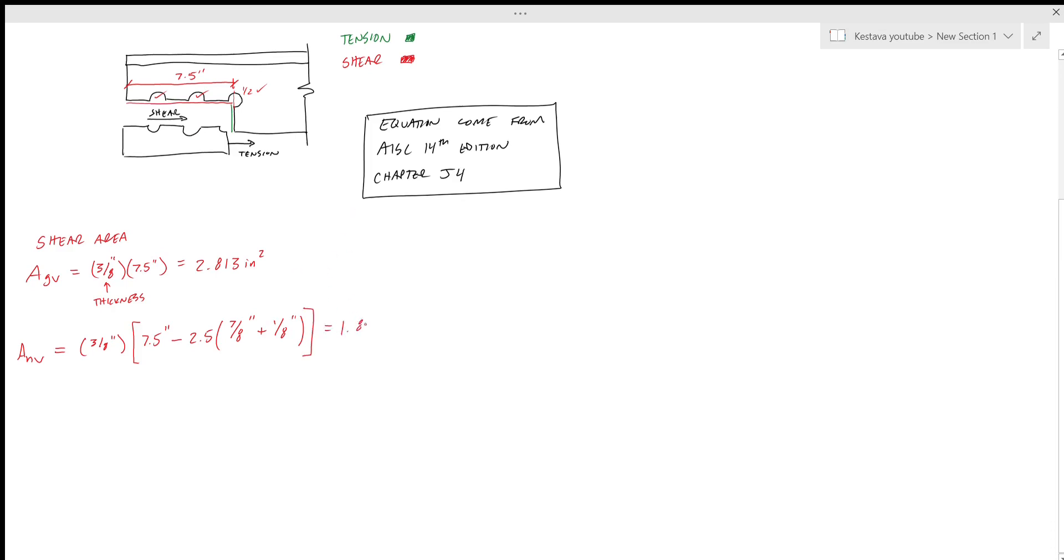Now shear's out of the way, let's switch over to tension area, denoted ANT. This is your net tensile area. ANT is going to equal the thickness of our member times 1.5 inches, that's the gross length experiencing tensile forces, minus one half of a bolt hole. That's just in that top corner there. That equals 0.375 inches squared.